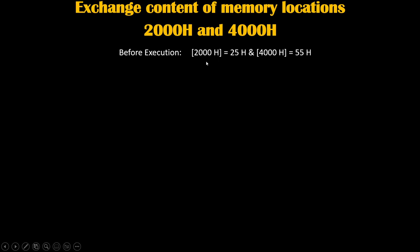Hello everyone. Today we are going to learn a program to exchange the content of memory location 2000h and 4000h. So before execution, let's say 2000h is holding 25h and 4000h is holding 55h. We will transfer the content of 2000h which is 25h to 4000h, so 4000h will become 25h, and in return we will transfer 55h to 2000h, so 2000h should become 55h. That is our aim.